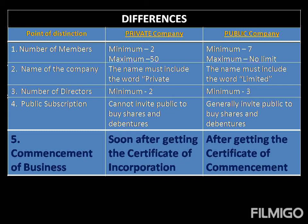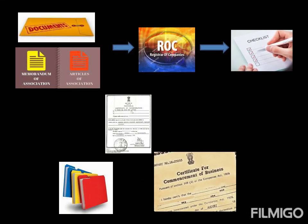Moving on to the next point, we are now discussing the commencement of business. When the process of forming a company is taking place and the registration is in progress, the memorandum of association and the articles of association have to be submitted to the registrar. After checking all these and on satisfaction of the documents, the registrar issues a certificate of incorporation.